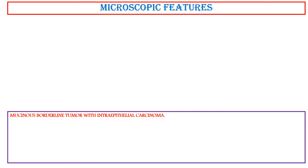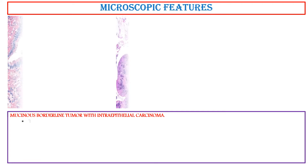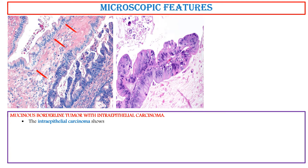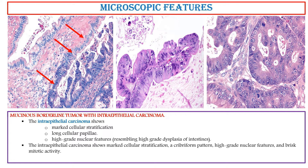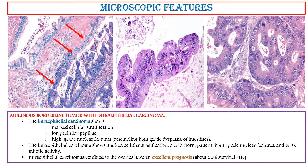Mucinous Borderline Tumor with Intraepithelial Carcinoma: The intraepithelial carcinoma shows marked cellular stratification, long cellular papillae, and high-grade nuclear features, resembling high-grade dysplasia of the intestines. In this photo, the intraepithelial carcinoma shows marked cellular stratification, a cribriform pattern, high-grade nuclear features, and brisk mitotic activity. Intraepithelial carcinomas confined to the ovaries have an excellent prognosis — about 95% survival rate.